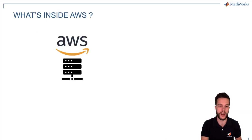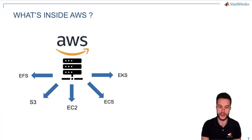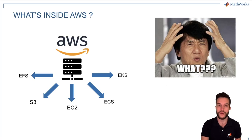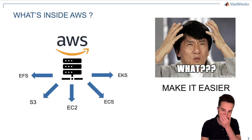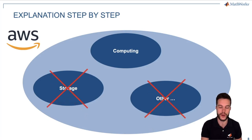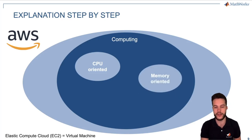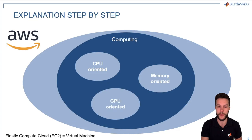What's inside Amazon Web Service? Amazon Web Service is a group of different services that Amazon puts online. For example, EFS, S3, EC2 — different types of servers and computation machines, each specific for some tasks. We can cluster these into computing machines, storage machines, and other types. Focusing on computing: it contains many different types of machines — CPU-oriented, memory-oriented, GPU-oriented. If you need one specific task, you can select the best machine that suits your need.